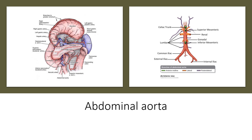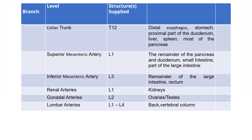After leaving the heart and descending through the thorax, the aorta crosses the diaphragm at the level of the twelfth thoracic vertebra and descends through the abdomen, where it is known as the abdominal aorta. The abdominal aorta terminates at L4, where it bifurcates into the two common iliac arteries. There are a number of branches from the abdominal aorta that supply the abdominal organs, spine, and posterior abdominal wall. These branches fall into one of three categories: anterior midline, lateral, and posterolateral.